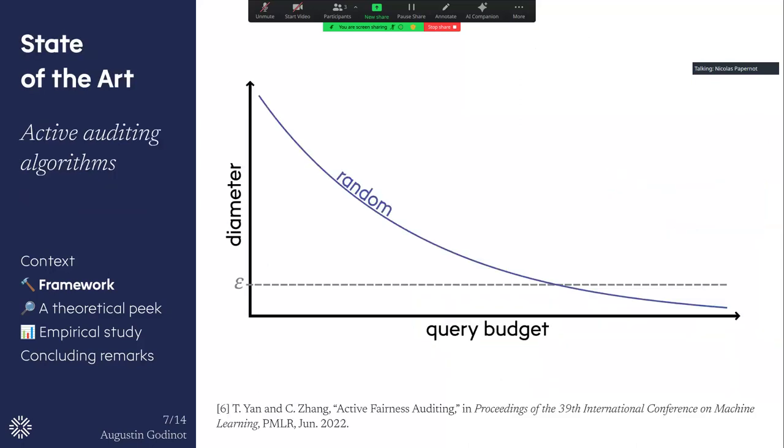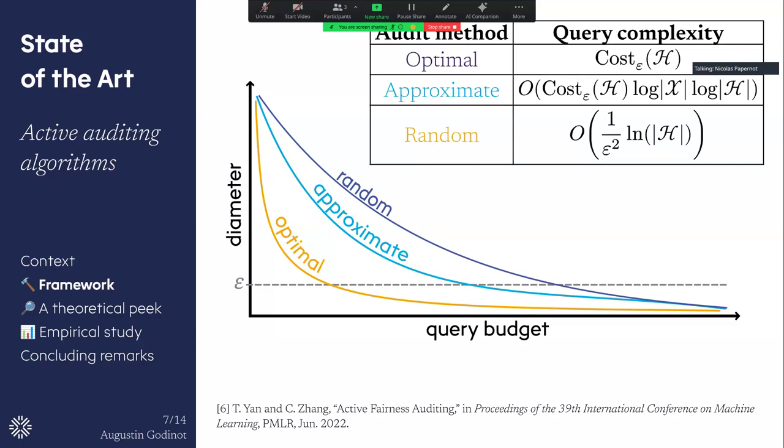So Jelensegg proposed three algorithms. A random one, an optimal algorithm which is interacting optimally with the platform in order to construct the audit set, but sadly it has a hardness result. And then an approximate algorithm where they use some shadow models in order to select the next points to query to the auditor. So all of these models have a very nice complexity bound, so we know what are their performance.